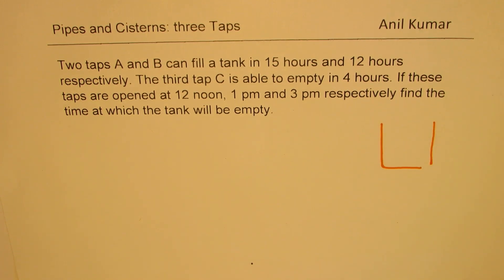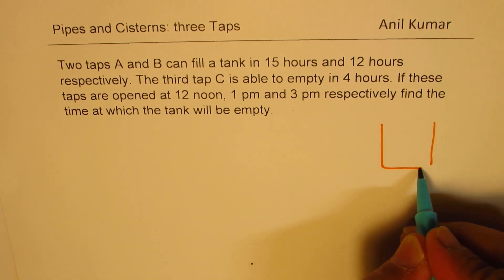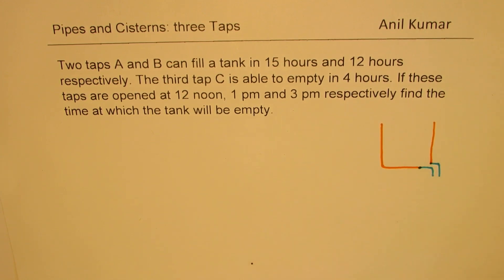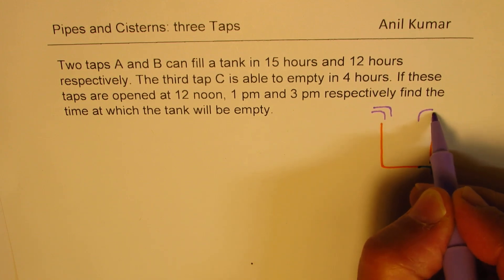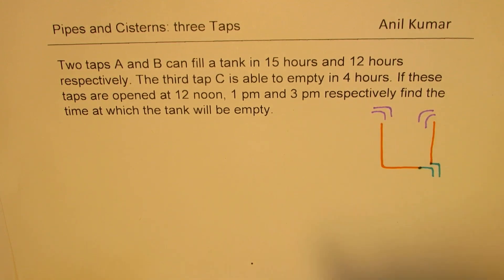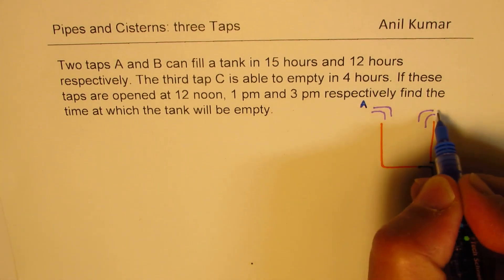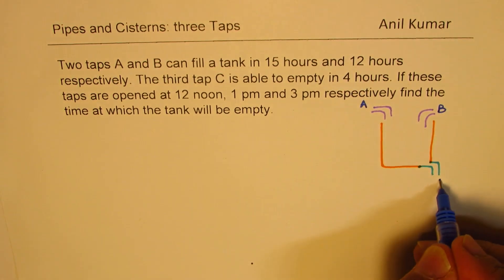So this is the situation here. We have a tank which is fitted with three taps. Right at the bottom, we have one to empty. And there on the top, we have two to fill. So let's call them A and B, and this one C.